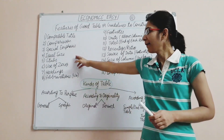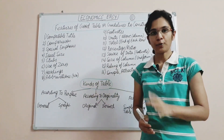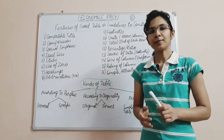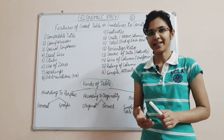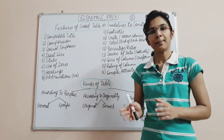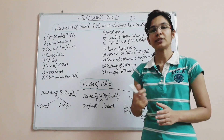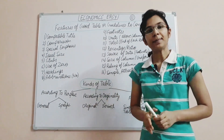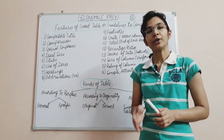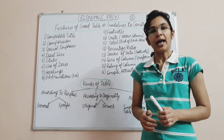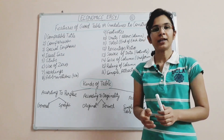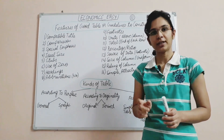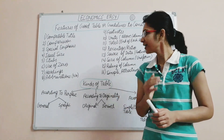Fourth, the size of the table should be appropriate. Fifth is stubs: stubs means row headings; if rows are very large, we should properly label them. Sixth is the use of zero: zero should be written when a data item has zero quantity. If no data is available, we do not write zero — instead we use a hash symbol. But if the value is actually zero, we write zero.